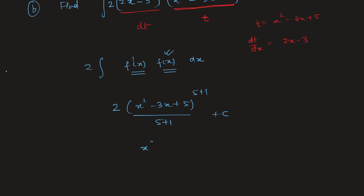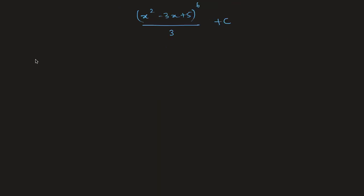Simplifying: (x² - 3x + 5)⁶/3 + c. For more clarity, let's consider one more example: integrate (x⁵ + 2x)⁷ · (5x⁴ + 2) dx.